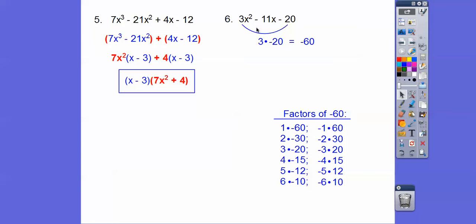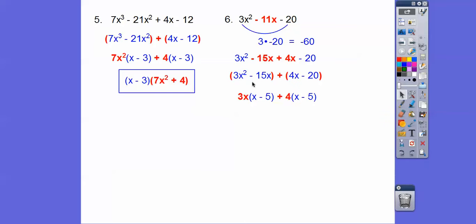-11 will come from this pair right here. So we're going to replace that -11 with those numbers, -15x + 4x. Then we can factor by grouping, and then when we pull the 3x out, we're left with (x - 5). We pull the 4 out, (x - 5), and you pull the (x - 5)s out, and there you go.